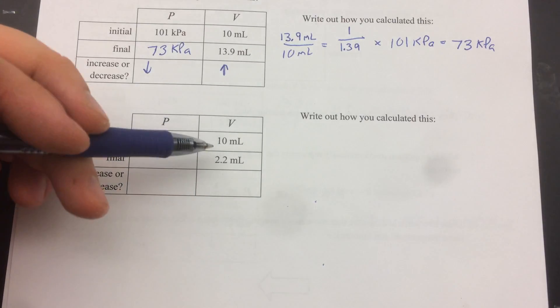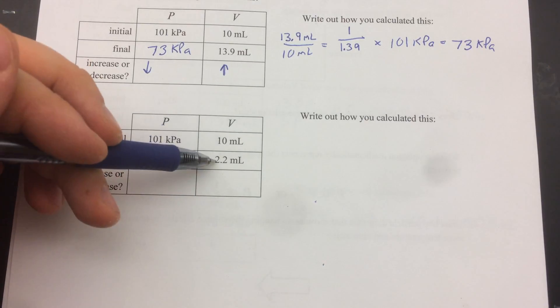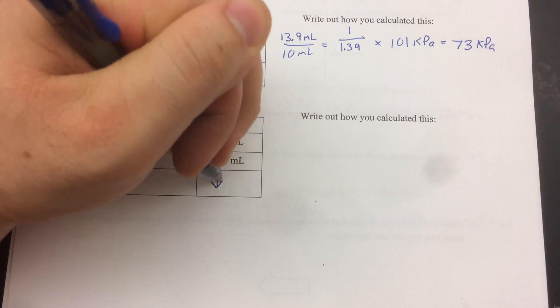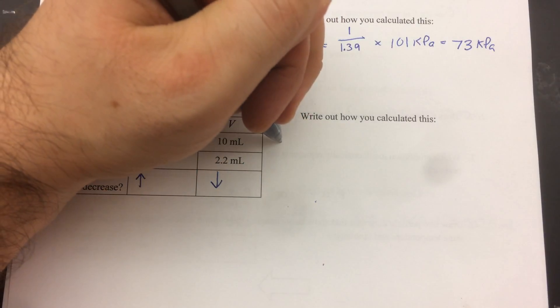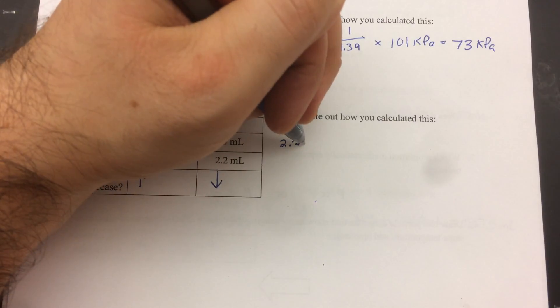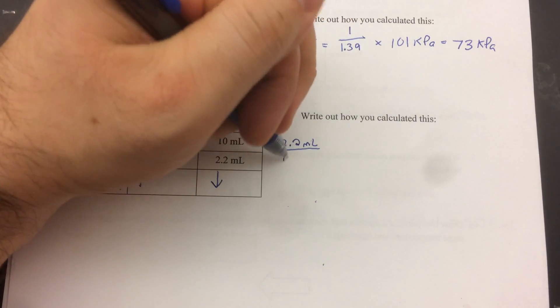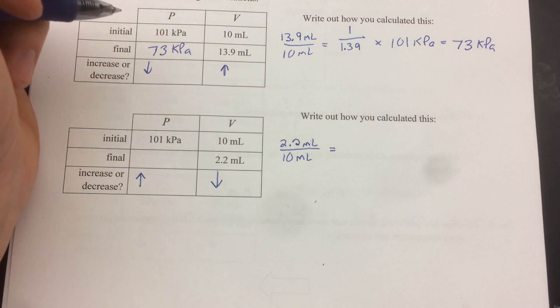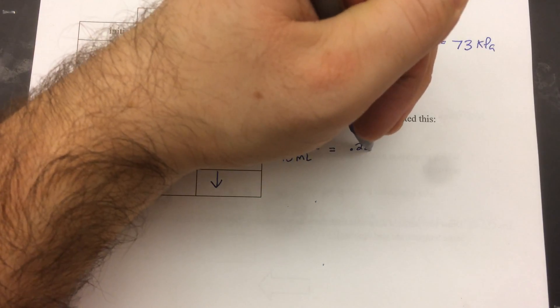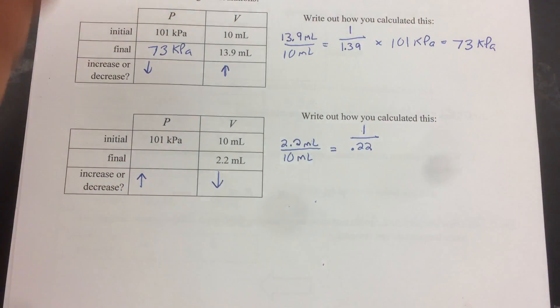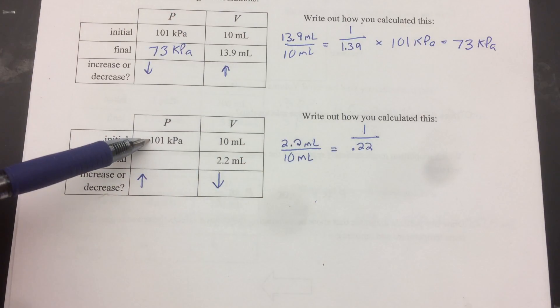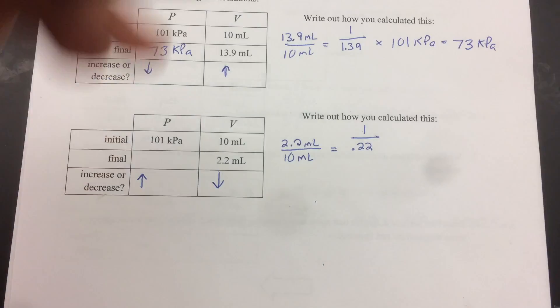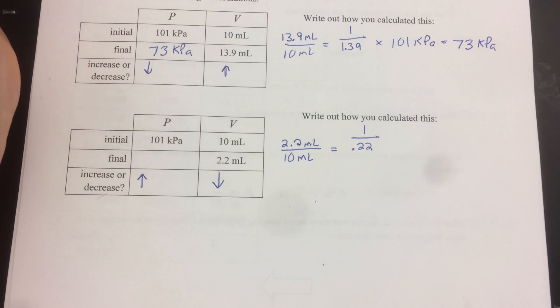Last one. 10 to 2.2. It's decreasing. So if that's decreasing, we're going to predict that this is going to increase. So our answer should be higher than 101. So same way, 2.2 over 10 milliliters equals .22 on the bottom. Now if you look at this number, you're going to take 1 over a decimal. That's going to be bigger. And that's going to multiply by the pressure, and that's going to make the pressure bigger. See how that works? So I'm just going to press my inverse button next to the minus 1 on my calculator.